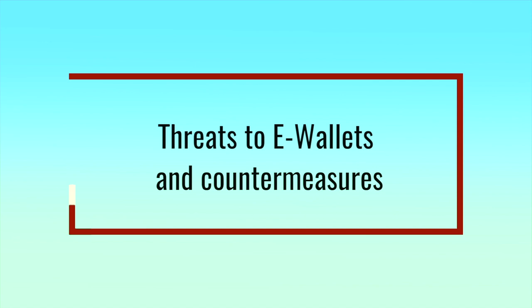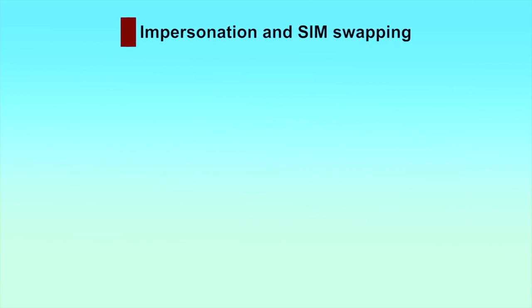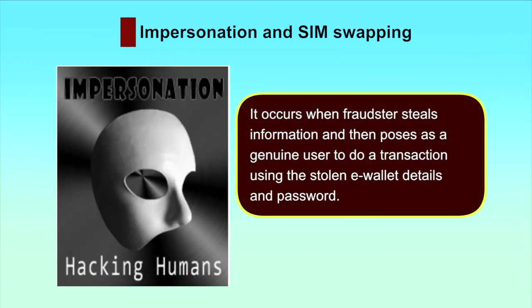Now we will discuss about threats to e-wallets and countermeasures. The first kind of threat to electronic wallets is impersonation and SIM swapping. Impersonation occurs when a fraudster steals information and then poses as a genuine user to do a transaction using the stolen e-wallet details and password.